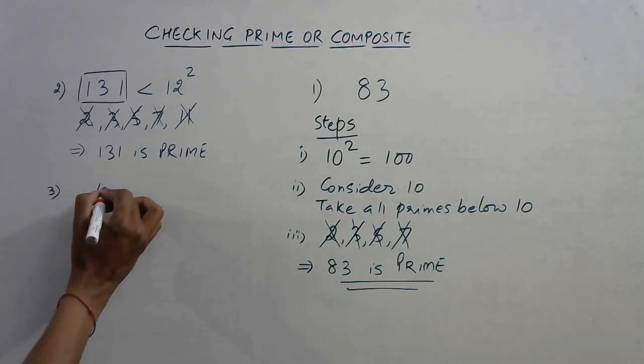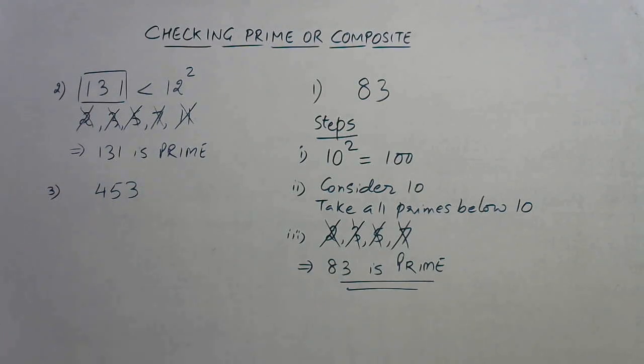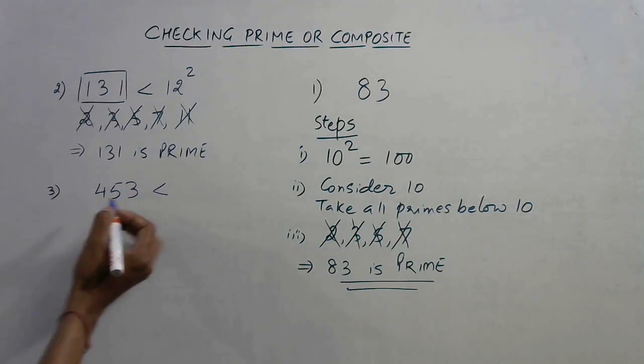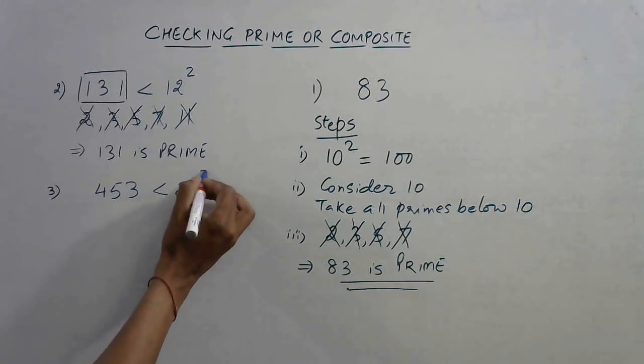So let's take 453, a large number, and I need to check whether this is divisible by any number or not. So see, 20 square is 400, so 21 square is 441, 22 square is 484.